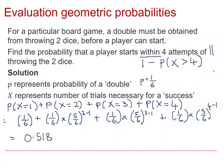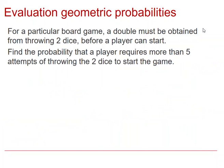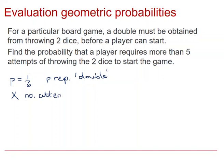The next example looks at finding the probability of having more than a particular number of events. Still using the probability of a success as obtaining a double: P, the probability of success, is one sixth, where P represents the event of throwing a double. And X, our random variable, is the number of attempts required in order to obtain a double.